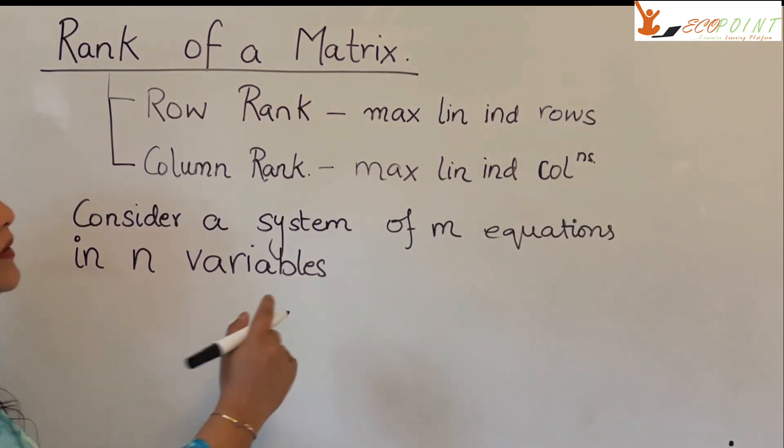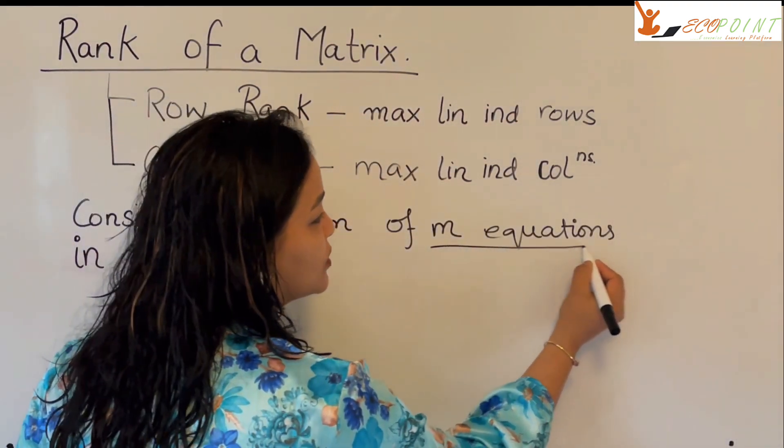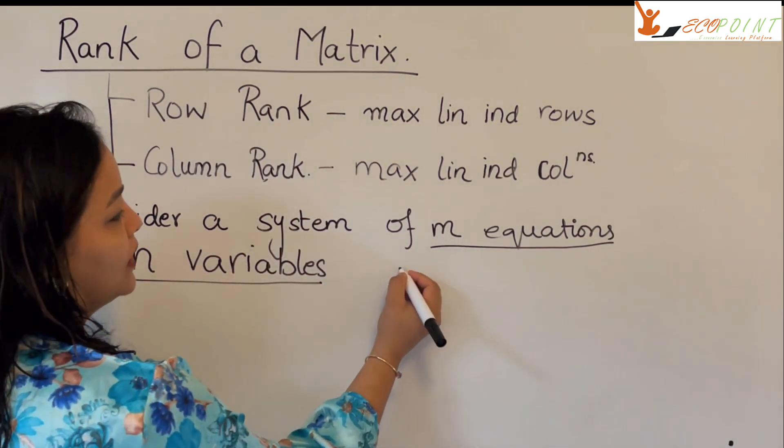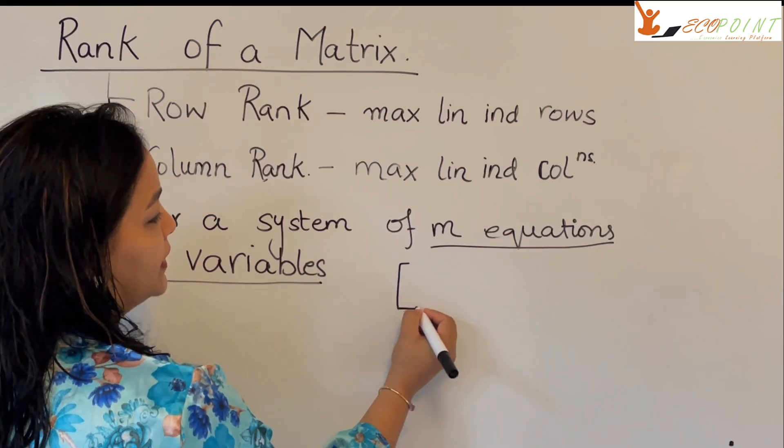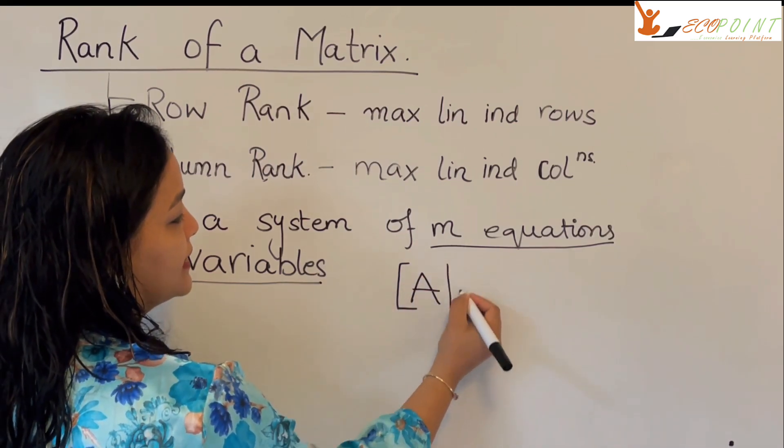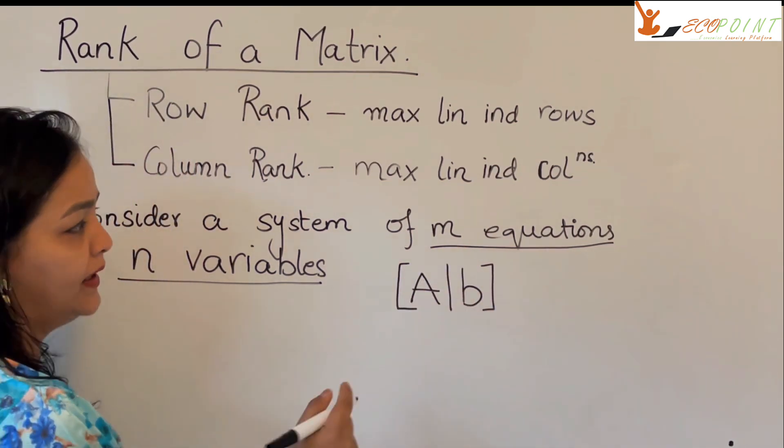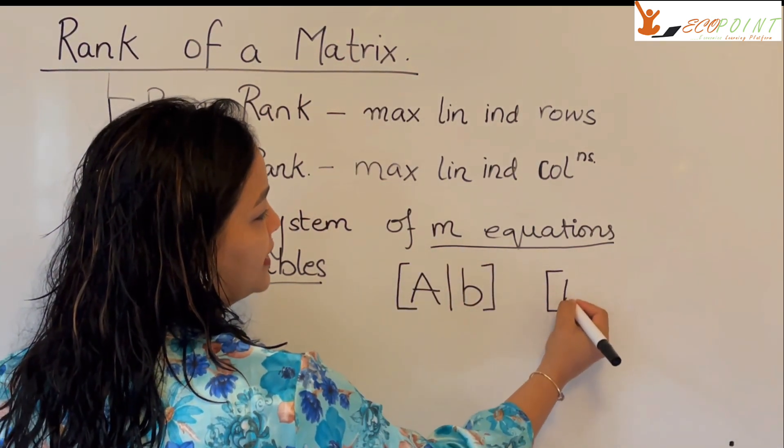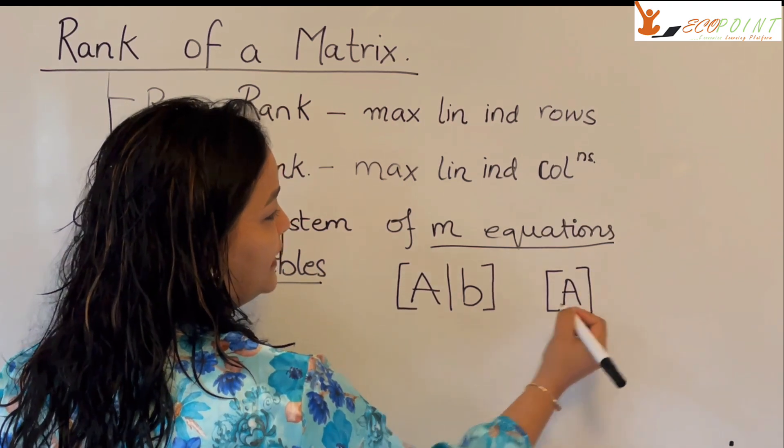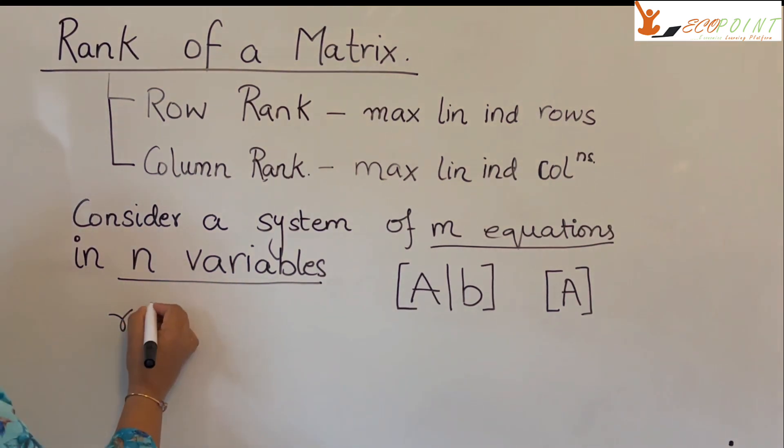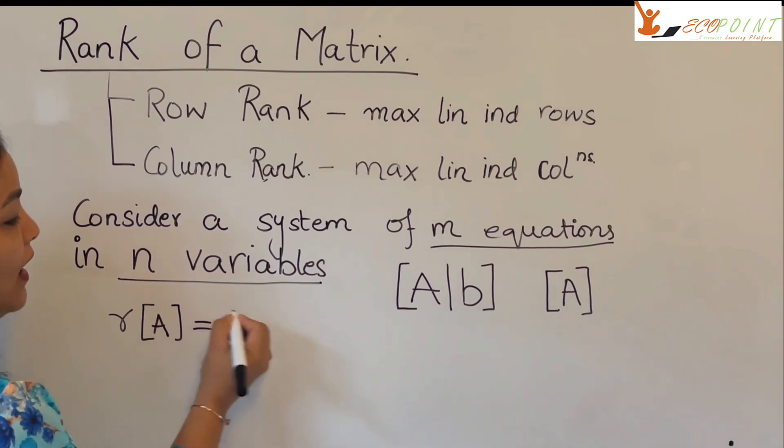And you also have your coefficient matrix. So, what we do is we compare the ranks of the two. Let's consider a system of equations where you have m equations in n variables. You can write down your system of equations in the augmented form, A augmented B, right? Where A is the coefficient matrix. Now, suppose that rank of the coefficient matrix is, say, R.